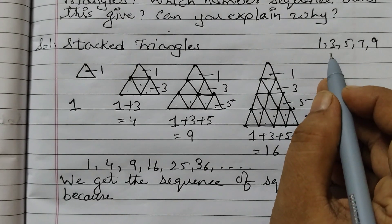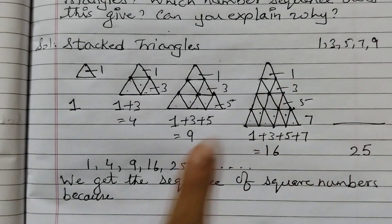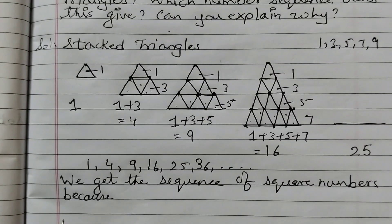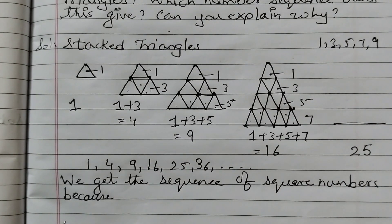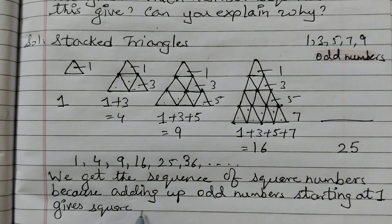Which gives square numbers. So the same concept we are using here. So we will write: we get the sequence of square numbers because adding up odd numbers starting at 1 gives square numbers.